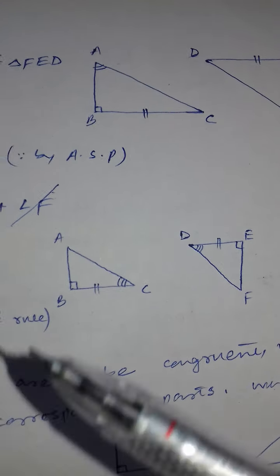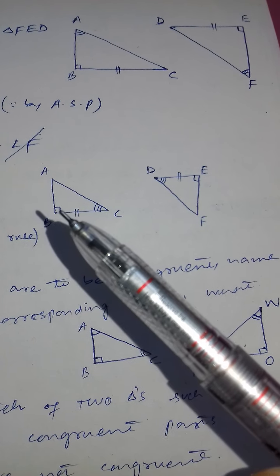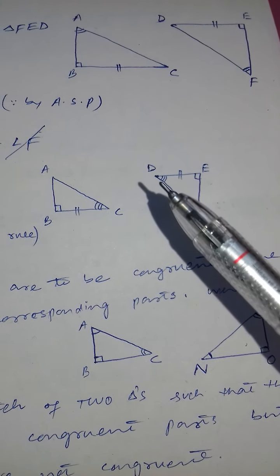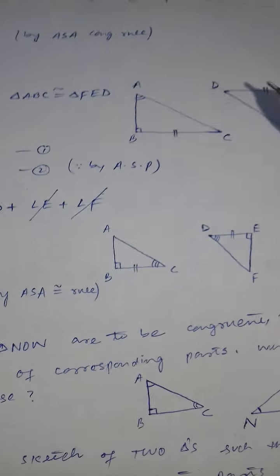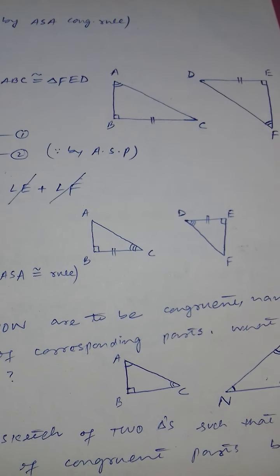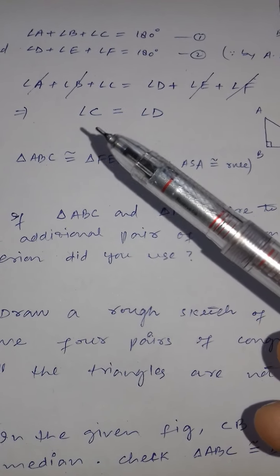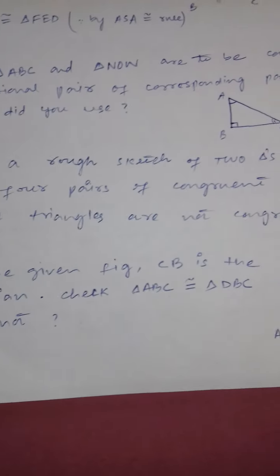Since angle C = angle D, we now have the Angle-Side-Angle condition satisfied. By the ASA congruence rule, triangle ABC is congruent to triangle FED. So the hidden piece was angle C = angle D, which we derived using the angle sum property. The remaining questions you can try on your own.